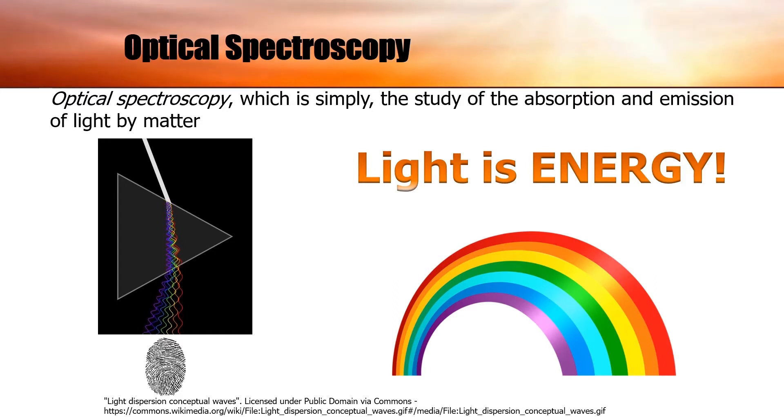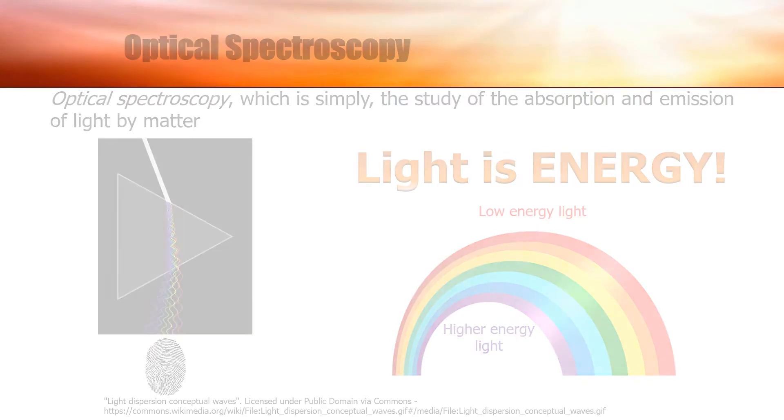From the electromagnetic spectrum, we know that for visible light, the bluer the light, the more energy it represents. Now what did we mean by absorption and emission of light in my definition of optical spectroscopy?